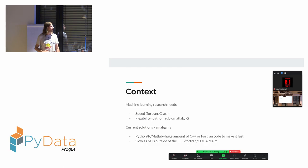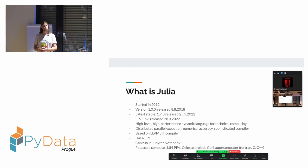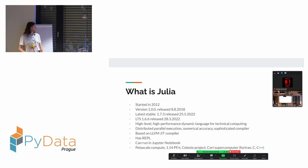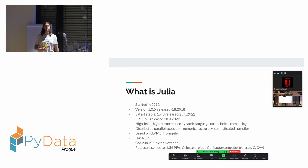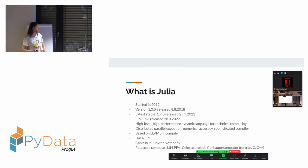Julia started about ten years ago, under heavy development for many years. Four years ago, version 1.0 was released, and since then many newer versions have followed. The latest stable version was released about one month ago, and there is also an LTS long-term support version. In general, Julia is a high-level, high-performance, dynamic language for technical computing. In the standard libraries, it supports distributed parallel execution - you can perform computations on a cluster out of the box without anything extra. It has good numerical accuracy and a sophisticated compiler.